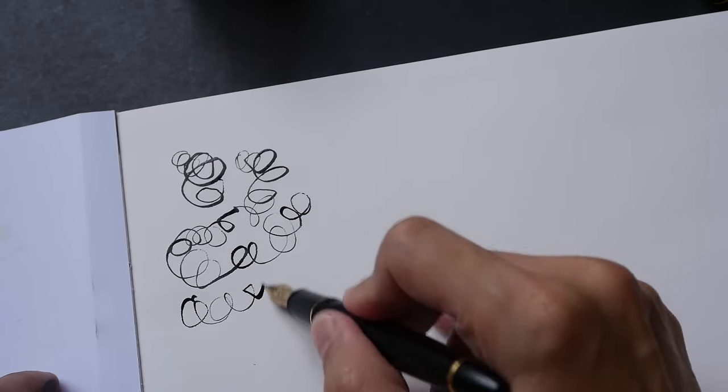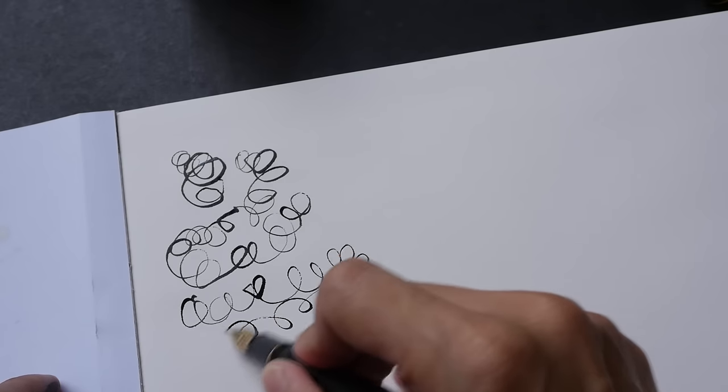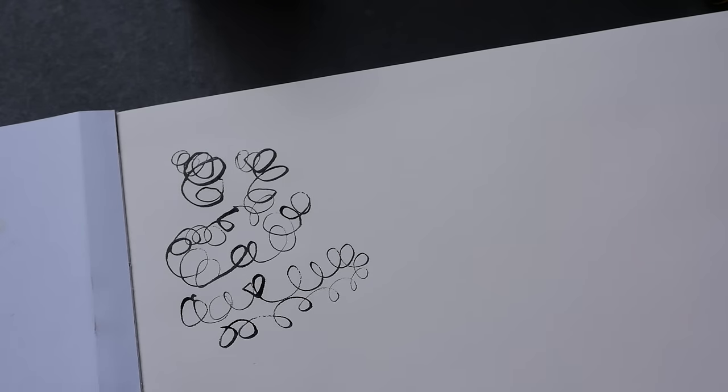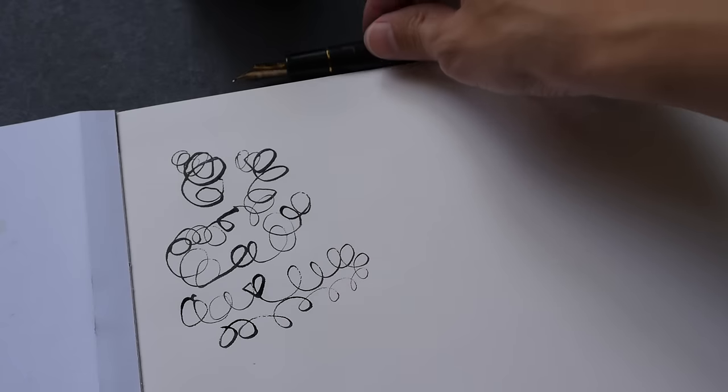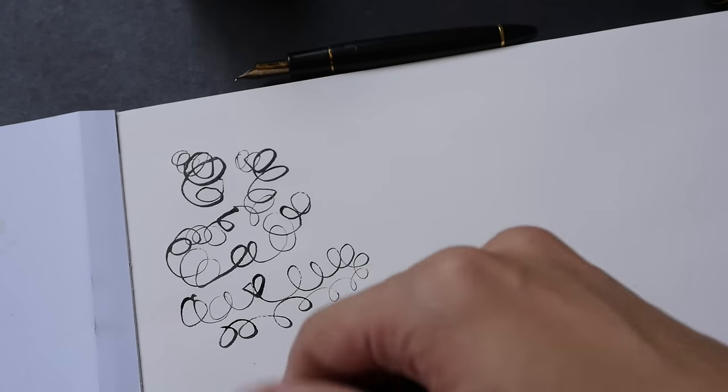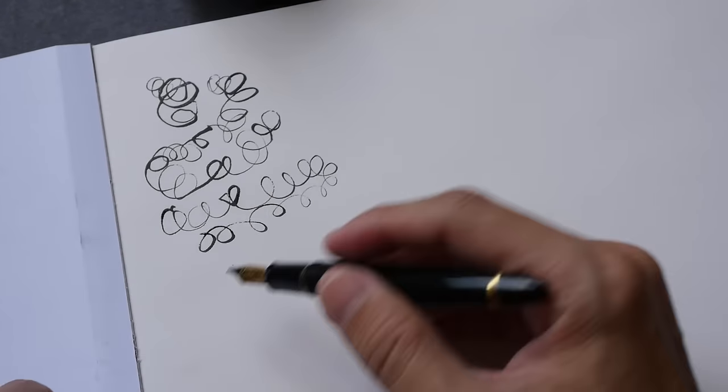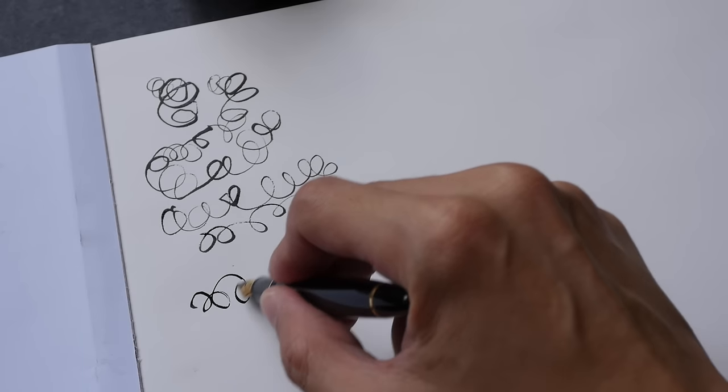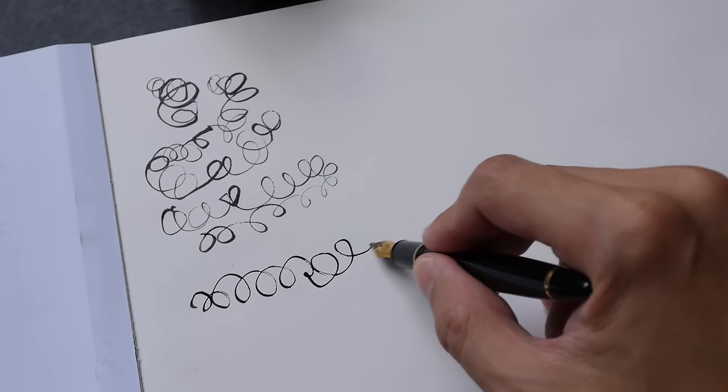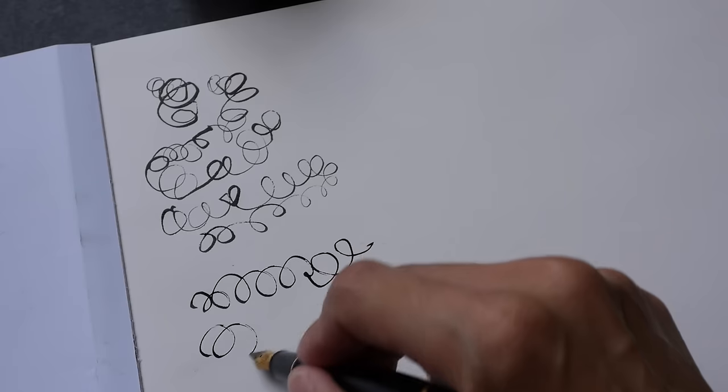So you can see that I can create thin and thick lines effortlessly. This is not so with some other nibs, for example let me switch to the music nib. Yep, I'm using the music nib now, so I'm gonna do the same thing with these circular strokes.